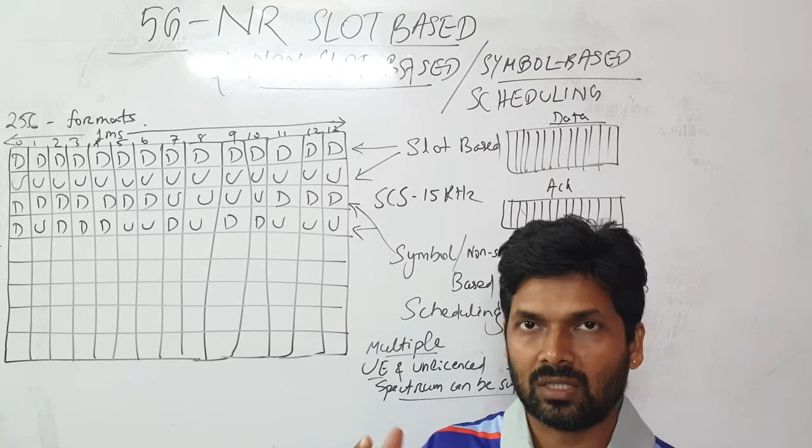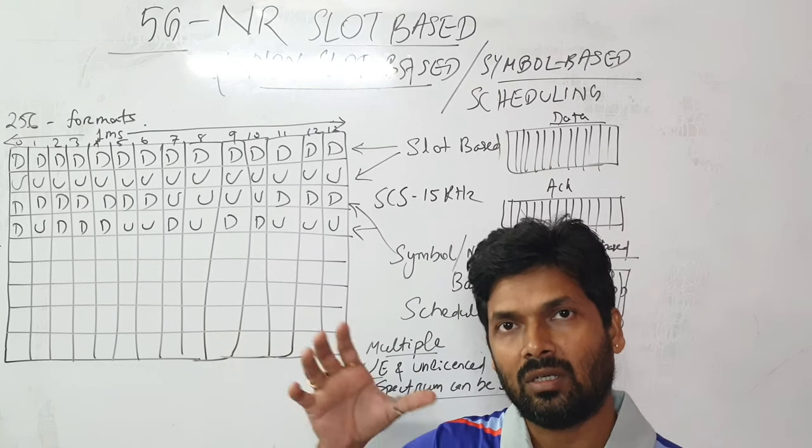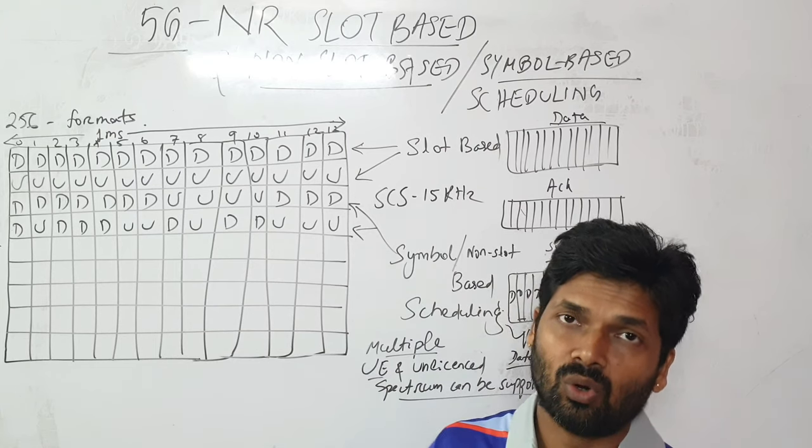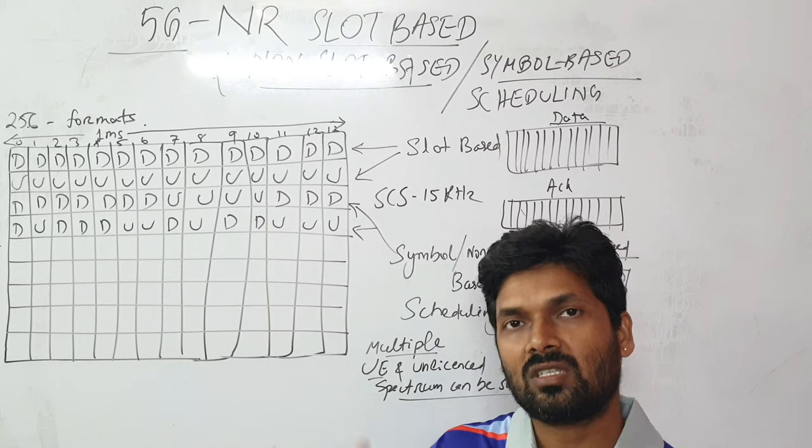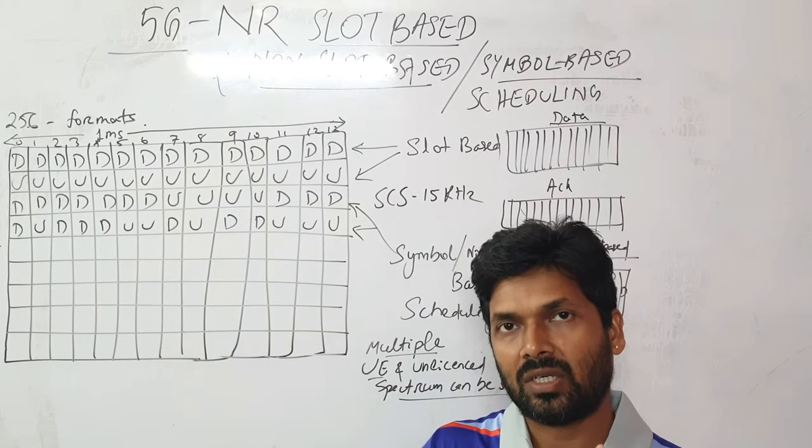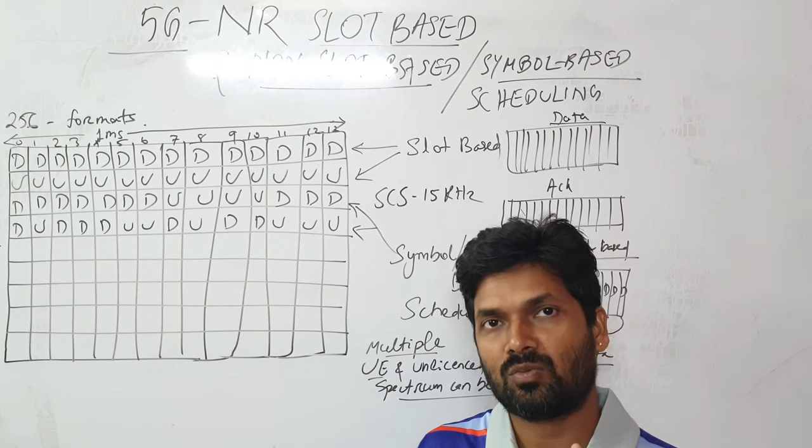You can do either slot-level downlink or uplink transmission and control them through network parameters. Or we can go with symbol-based scheduling, which means in the same slot you can allocate both downlink transmission and allow uplink transmission to happen.